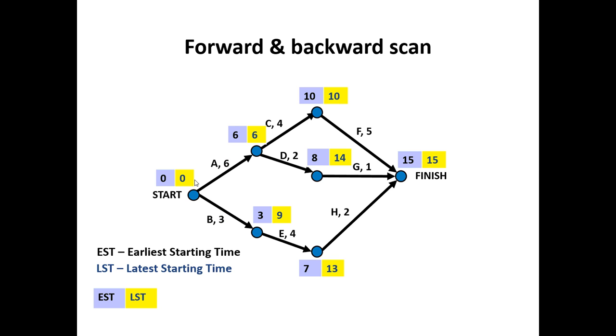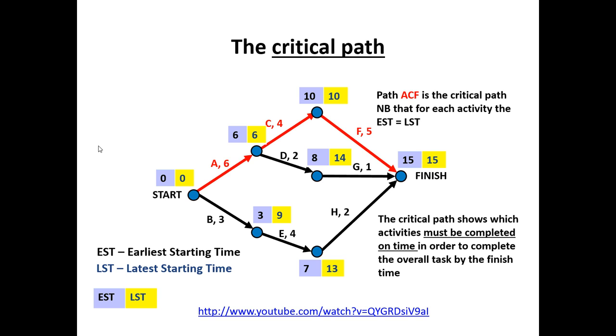Let's now have a look at our critical path. Now a critical path is the path we must take, whereby to extend or delay any activity on that path, will extend or delay the entire project. So let's consider. If we start at zero, activity A takes six minutes. Activity C takes four, which gives us the time of ten. Activity F takes five, which takes us the time of fifteen.